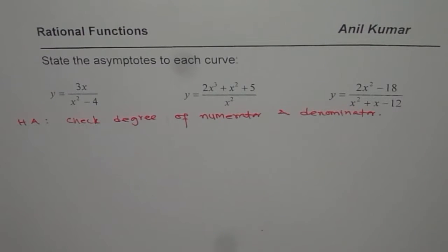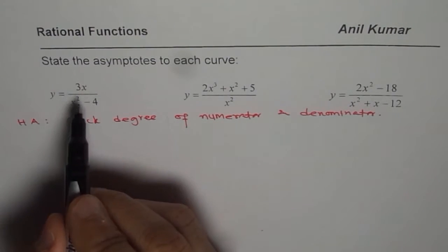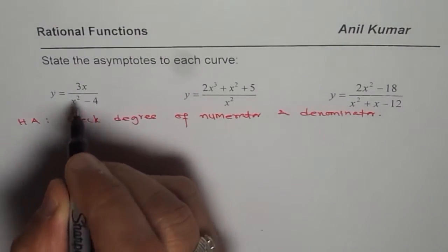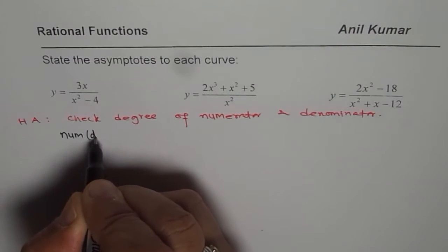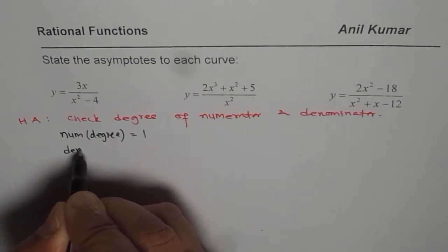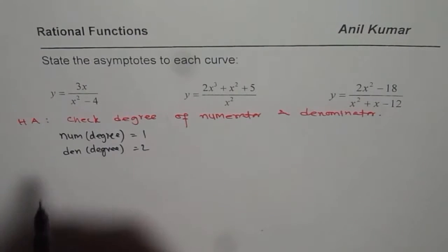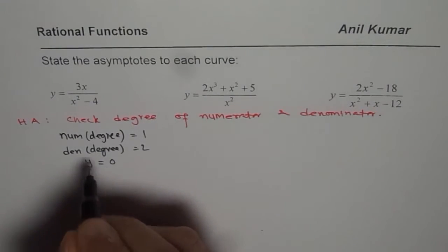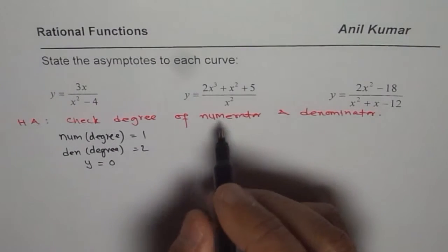We will see how checking and writing the value is related. In the first case, 3x — the degree for the numerator is 1, and the denominator degree is 2. Since the denominator degree is higher, it will have a horizontal asymptote and the equation is y equals to 0. So the x-axis is the horizontal asymptote.